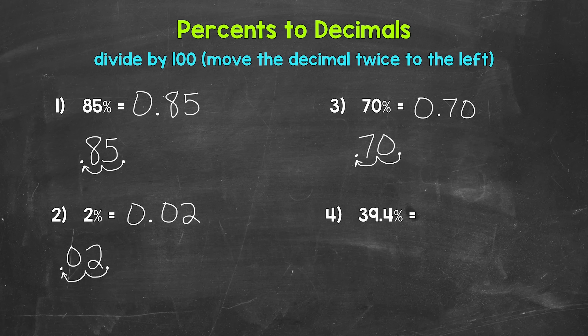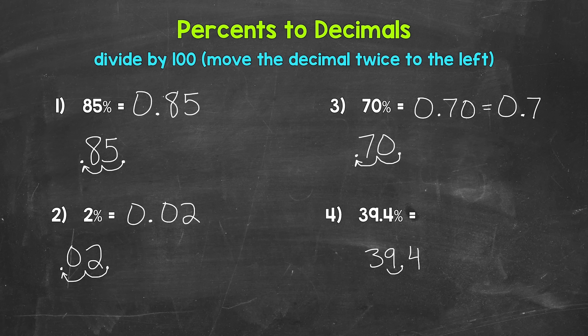One more thing to mention about number three: zeros to the right of decimal digits do not change the value, so we can write this as 0.7, seven tenths. We took that zero off the end — these decimals are equivalent, so both are correct. Lastly, number four: 39.4 percent. Divide by 100 — move the decimal once, twice to the left. We end up with 0.394. So 39.4 percent equals 0.394, three hundred ninety-four thousandths.